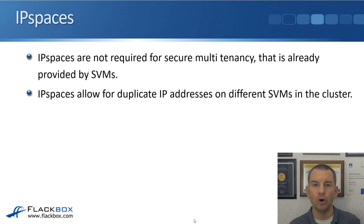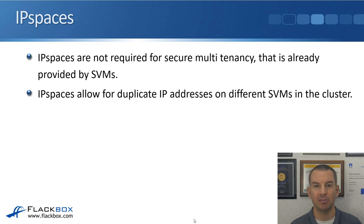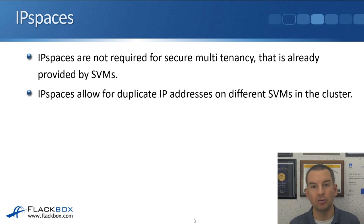IP spaces are not required for secure multi-tenancy — that is already provided by SVMs. With SVMs, say we've got an SVM for Department A and an SVM for Department B: Department A has its volumes in the Department A SVM, keeping the data separate, and its IP addresses on its lifts in the Department A SVM, keeping network connectivity separate. On your external routers and firewalls you'd configure rules preventing Department A clients from reaching Department B addresses. That secure separation is already provided by the SVMs — IP spaces are not required for that.